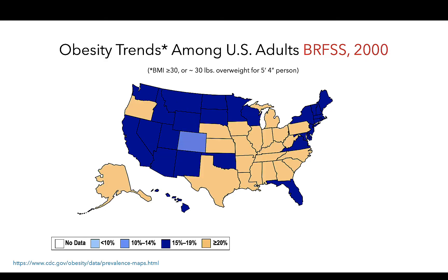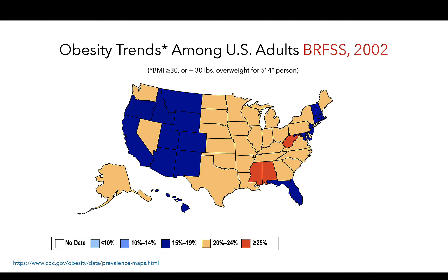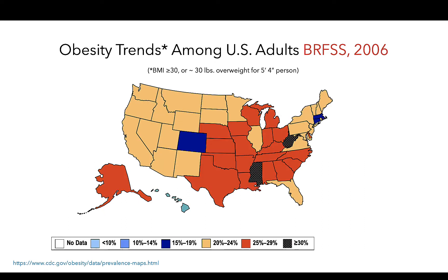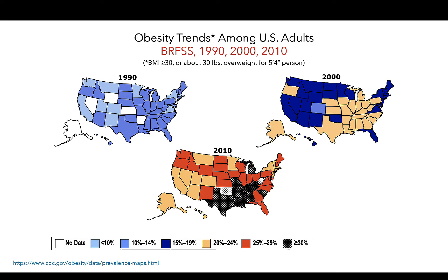As we progress to the 2000s, we see more and more states with 20 to 24% of adults with a BMI classified as obese and one state reporting greater than 25% of their population had a BMI classified as obese. Similar trends are seen throughout the 2000s into the 2010s.